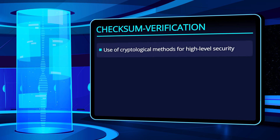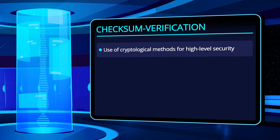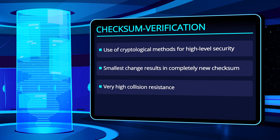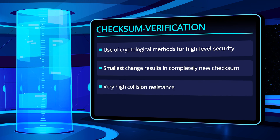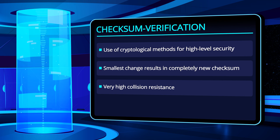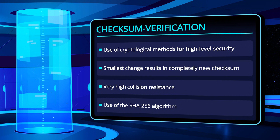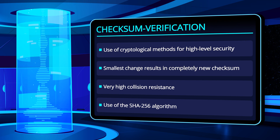For secure checksum calculation, much more complex cryptological procedures exist that are intended to ensure that the checksum is not reproducible. The smallest change to the original file generates a completely different checksum — the collision safety is very high. Adapting data purposefully so that the original checksum fits again is thereby made almost impossible. The verification of the Daedalus wallet installation file uses the SHA-256 algorithm, which is considered to be secure and calculates a 64-digit checksum of numbers and letters.